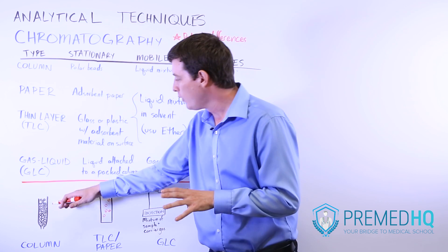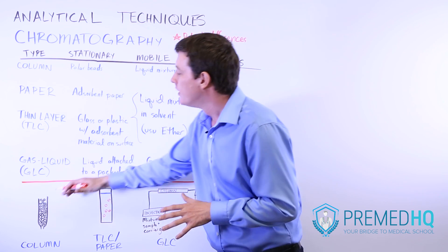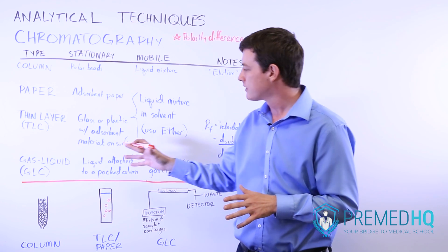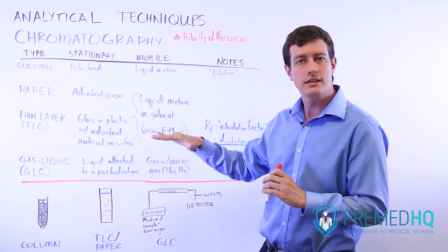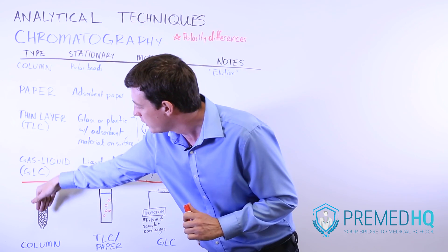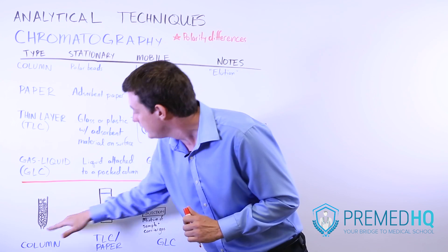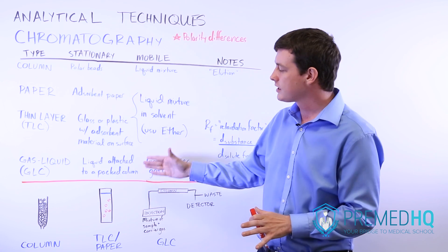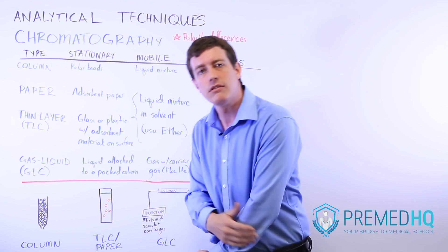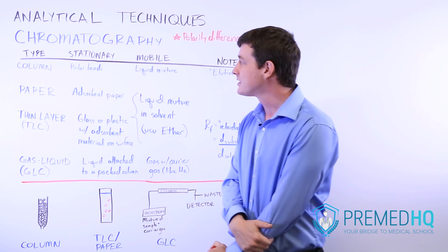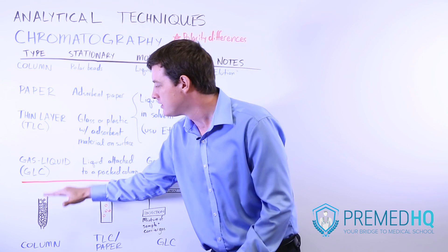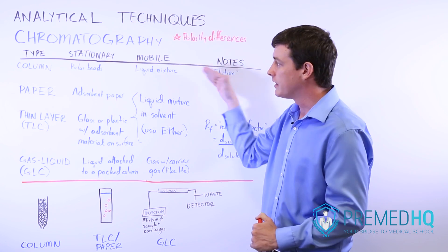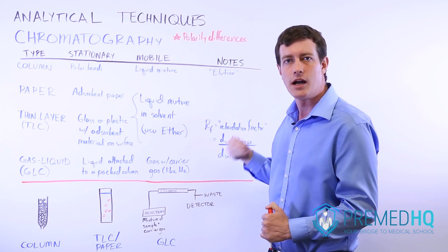The more polar a component of the mixture is, the more slowly it will move because it continuously reacts with the stationary phase of those polar beads. You can observe how quickly things elute through the column: if it elutes very quickly it's not polar, if it takes a long time to elute it's polar and interacting with the beads. This is column chromatography — something you've probably encountered in an organic chemistry lab.